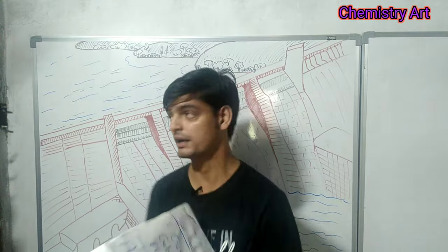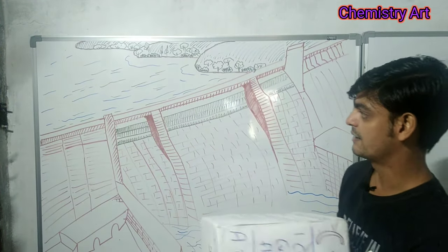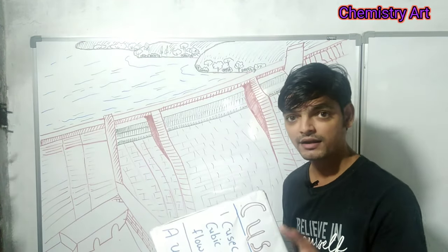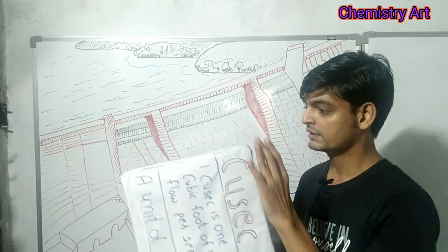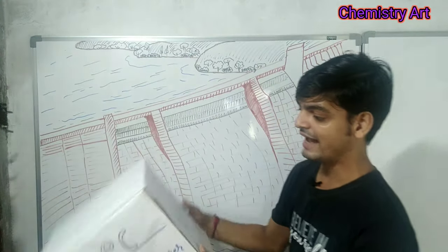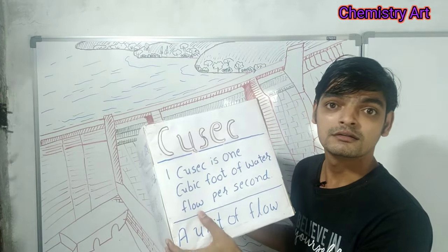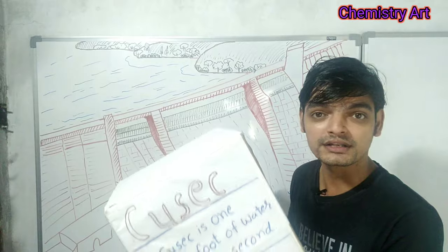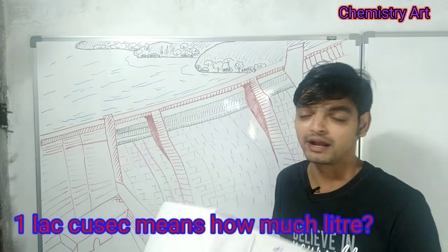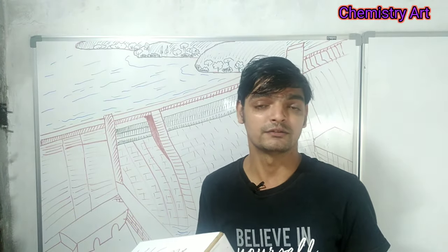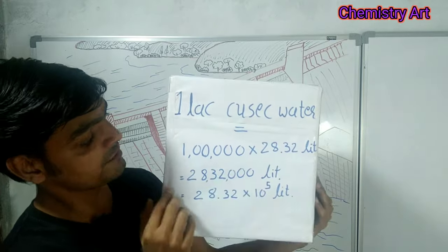This black one is a floodgate. From this floodgate, in a second, one lakh cusack water is flowing — meaning every second, one lakh cubic feet of water flows. This is known as one lakh cusack water, and believe me, it is a very, very huge amount of water.